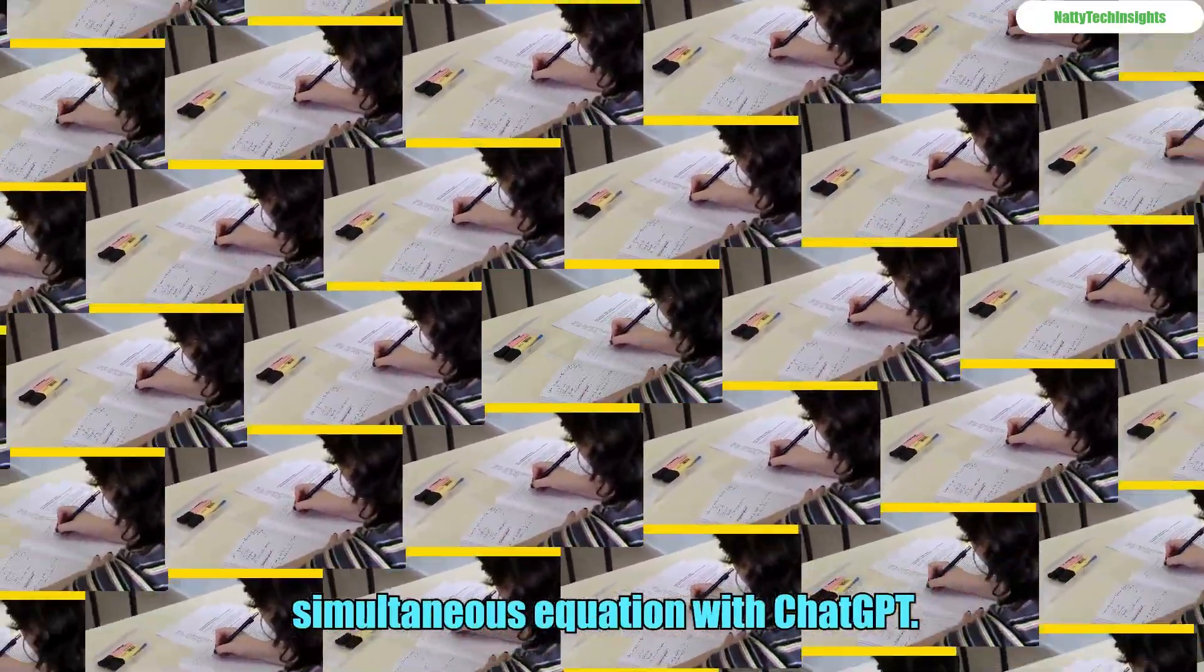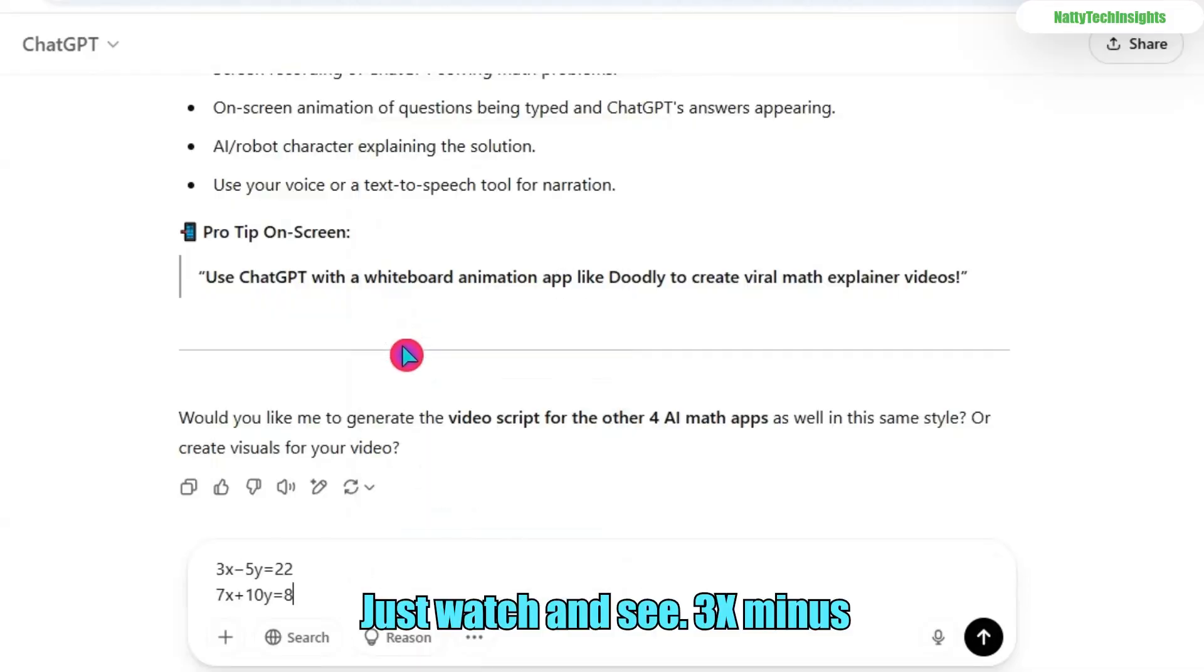Let's solve this simultaneous equation with ChatGPT. Just watch and see. 3x minus 5y equals 22. 7x plus 10y equals 8.